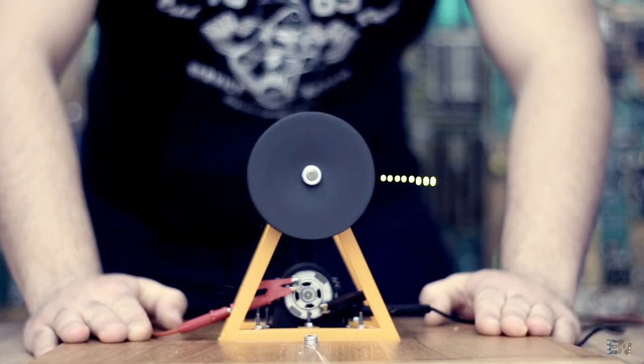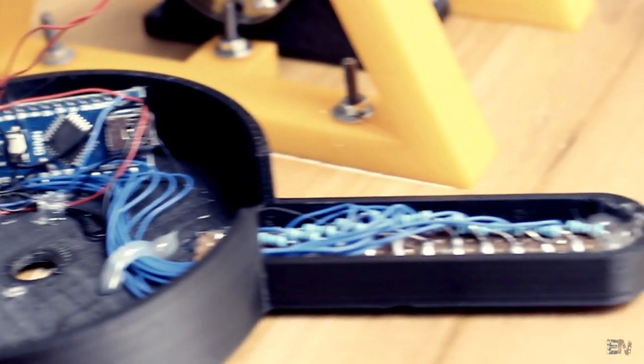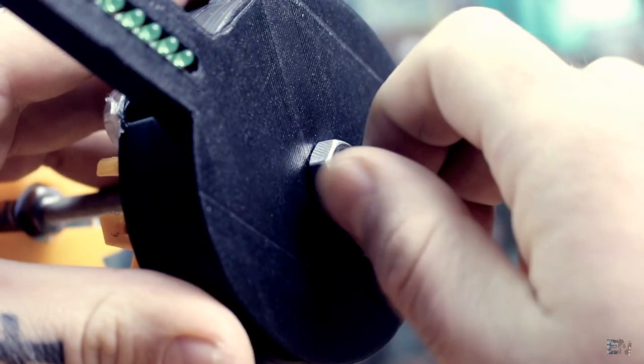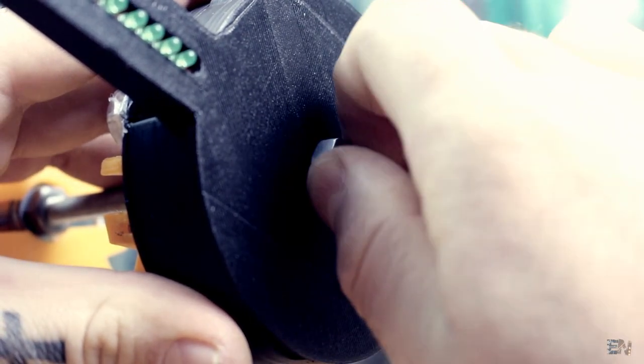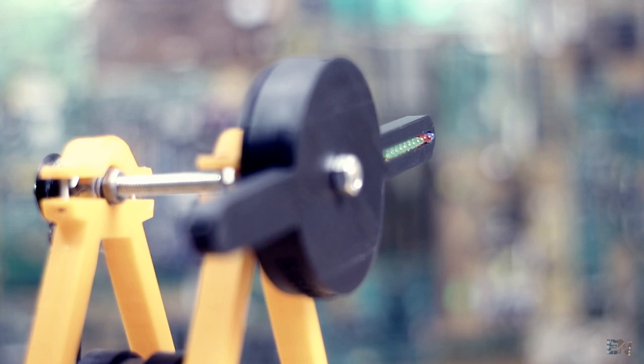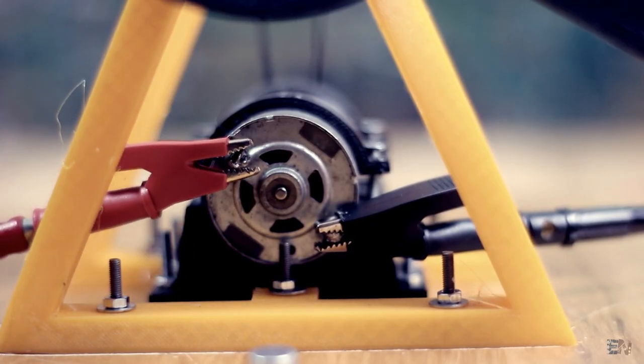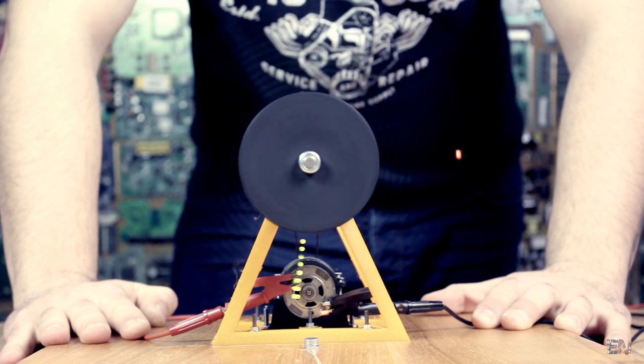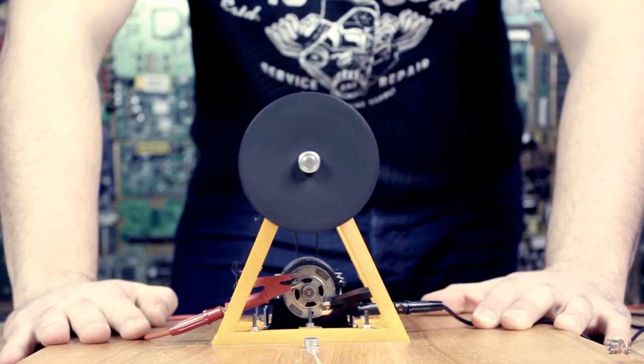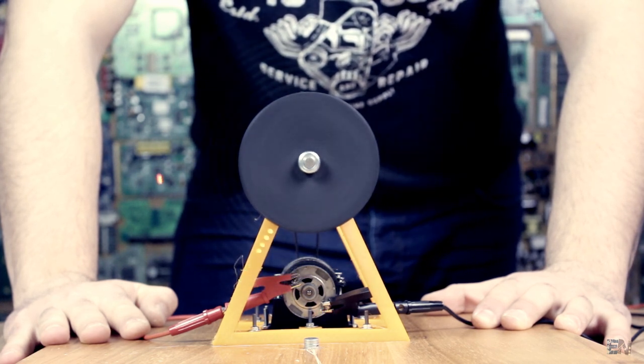I mount everything inside of the 3D printed case, I upload the code and close the case. I power the POV clock and turn the DC motor. The speed shouldn't be too high, but neither too low. There you go, I've got myself an awesome homemade POV clock. Pretty cool, right?